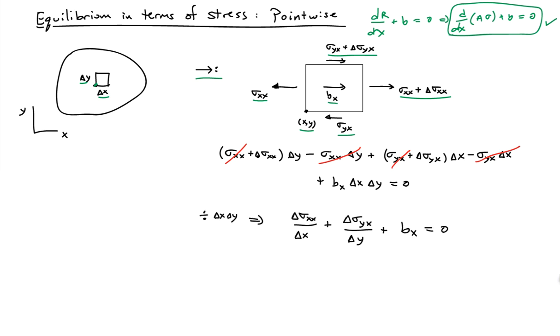I can now divide this expression through by the area of this little element, so Δx Δy. And so I receive this equation here: Δσ_xx over Δx plus Δσ_yx over Δy plus the body force in the x direction equals zero. And now I can consider taking the limit as Δx and Δy goes to zero.